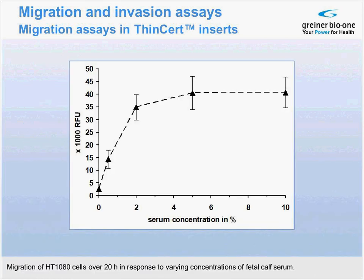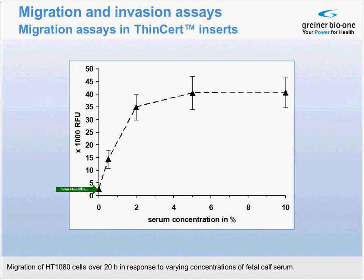In this experiment, we set up the migration chamber with varying concentrations of serum — starting from zero as a control, over 0.4, 2, 5, and 10% FCS in the lower compartment. There is a little bit of background migration which always takes place, but already by adding very little serum — in this case 0.4% — you can dramatically stimulate migration. By 5%, this curve runs into saturation.